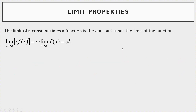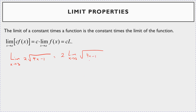The limit of a constant times a function is the constant times the limit of the function. For example, the limit as x goes to 3 of 2·√(4x-1): you can factor out the 2 and compute 2 times the limit as x goes to 3 of √(4x-1). Plug in 3: 4 times 3 is 12, minus 1 is 11, so the answer is 2√11.